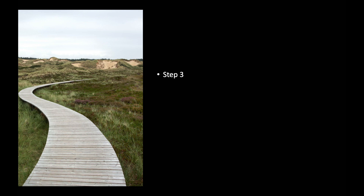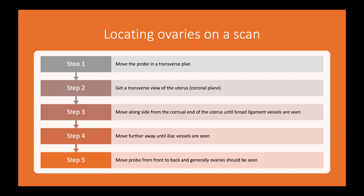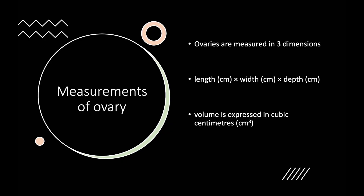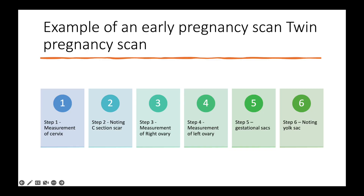Step three is to look for the ovaries. After the probe is twisted into the transverse position, it is swept from left to right and the ovaries are seen on either side of the uterus. Ovaries are measured in three dimensions — length, width, and depth — and their volume is expressed in cubic centimetres.